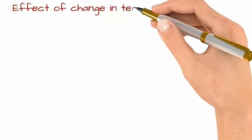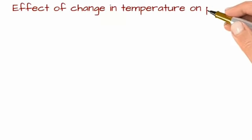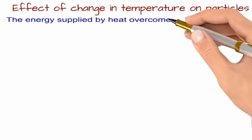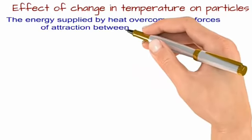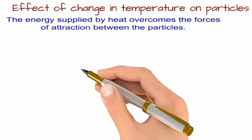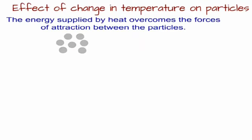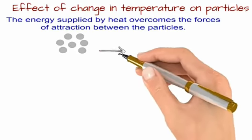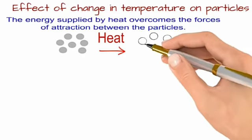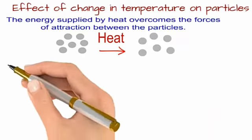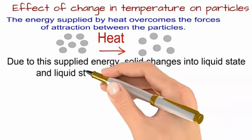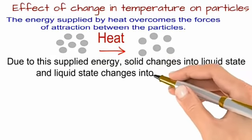Now we will talk about the effect of change in temperature on particles. The energy supplied by heat overcomes the force of attraction between the particles. When we take closely packed particles and apply heat, they get dissociated. Due to this supplied energy, solid changes into liquid state and liquid state changes into gaseous state.